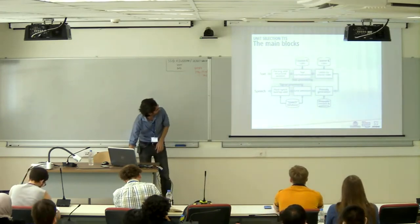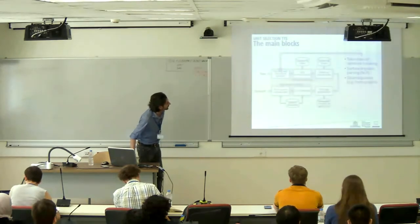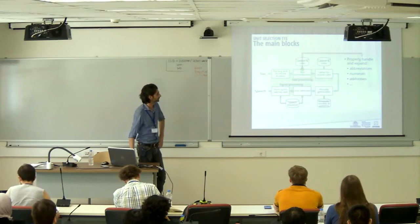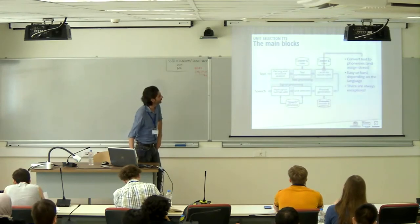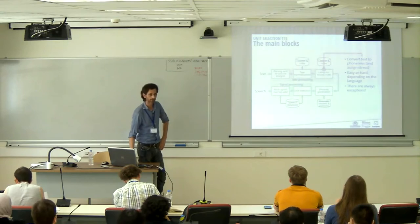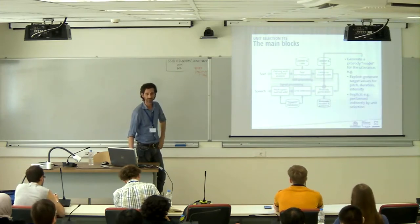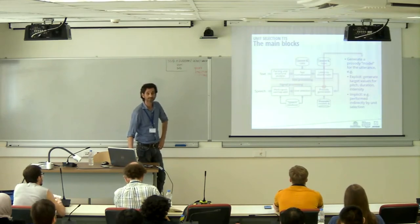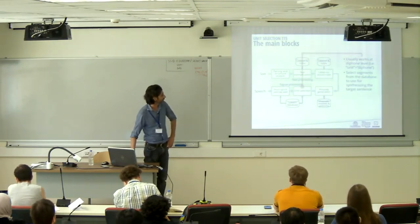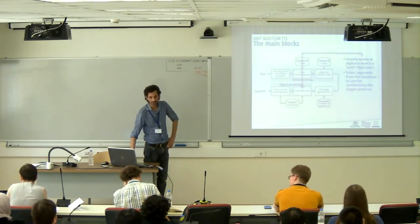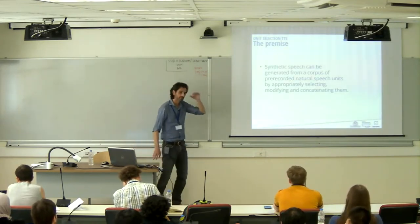After text processing we move to the core of the unit selection system, where we have a method to select among the various units and a method to concatenate the selected units. The premise is that synthetic speech can be generated from a corpus of pre-recorded natural speech units by appropriately selecting, modifying, and concatenating them. The key concepts are: what are the units, how do we select between the various available instances, and how do we modify and concatenate them.